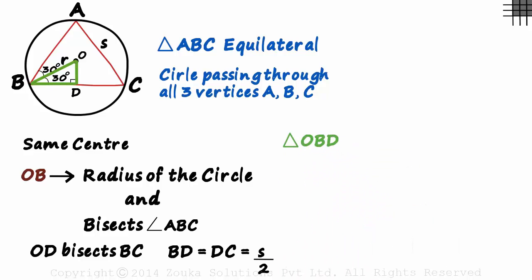It's a special triangle. A 30-60-90 triangle. So the sides will be in the ratio 1 is to root 3 is to 2. OB is R and BD is s by 2. Using this ratio, we can now easily find the relation between R and S.